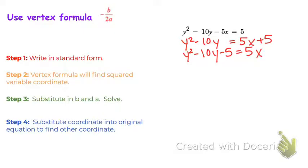And then the last step, we want this to be equal to x. So we need to get rid of that 5. To do that, I'm going to divide by 5, and I have to divide all of this by 5. And it gets a little messy. We have a fraction. So this is 1/5 y squared minus 2y minus 1 equals x.